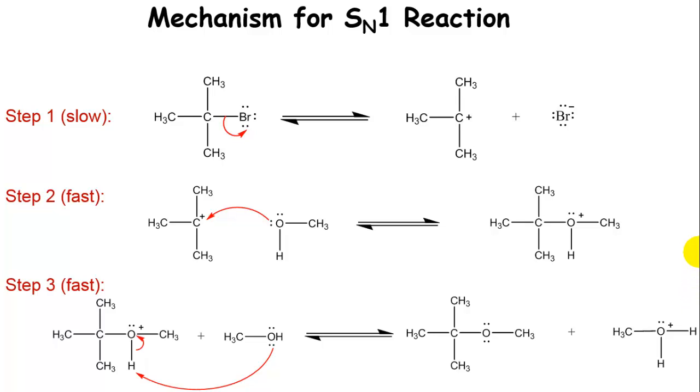So here is the mechanism for this particular reaction. We can see the first step is slow, and basically we're going to form a carbocation and a bromide anion. In the second step, which is fast, then a lone pair on the oxygen is going to bond with that carbocation.